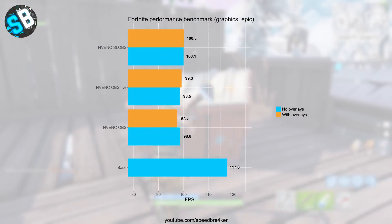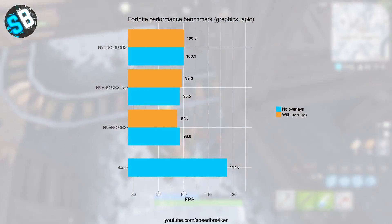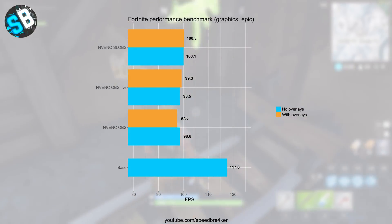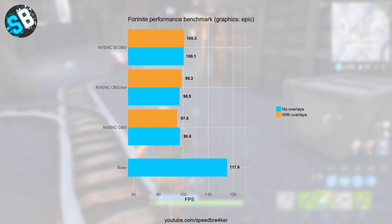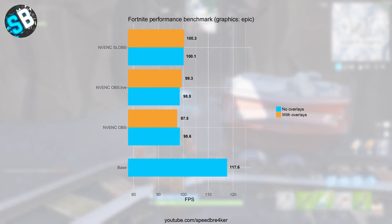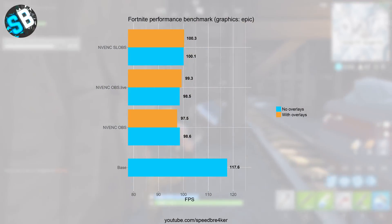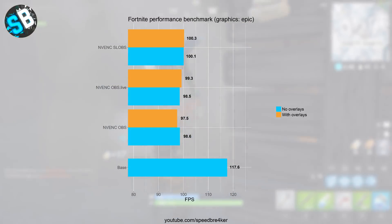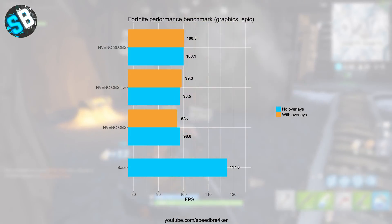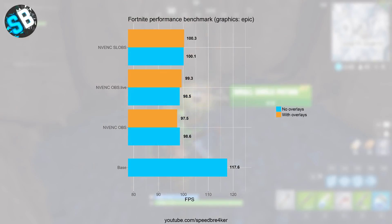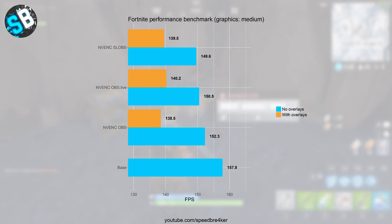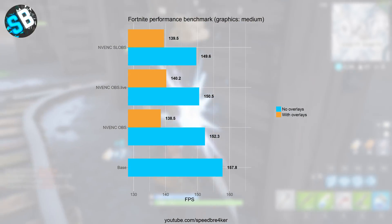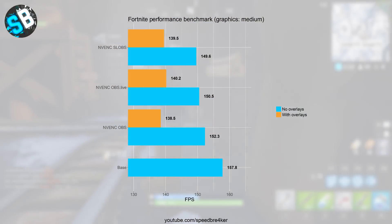I'm only showing results for NVENC due to limited testing time. In blue you can see the old values without overlays, and in orange the new ones with overlays enabled. The differences are almost negligible, and except for OBS Studio with all its different overlay sources being the lowest performing, there isn't really a clear winner between OBS Live and Streamlabs OBS. Repeating the benchmark at medium graphics settings also showed no difference between Streamlabs OBS and OBS Live.